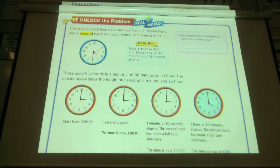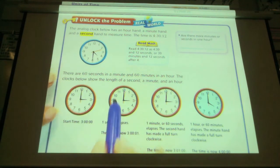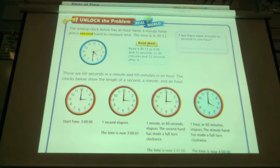So, the clocks below show the length of a second, a minute, and an hour. So, if you start at 3 o'clock exactly, and zero seconds, when one second elapses, this is what it looks like. The second hand moves to the one second tick mark. When a minute or 60 seconds elapses,